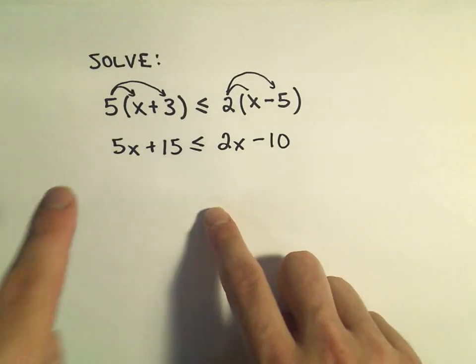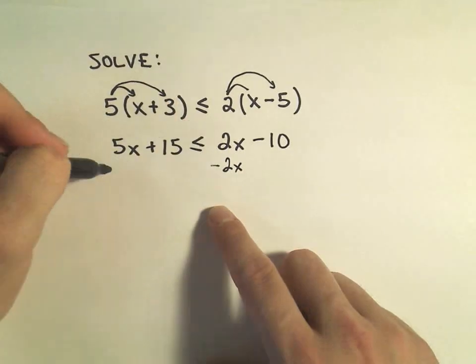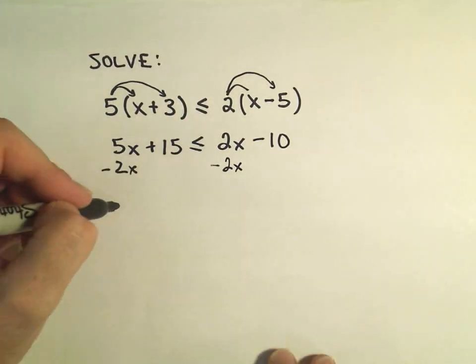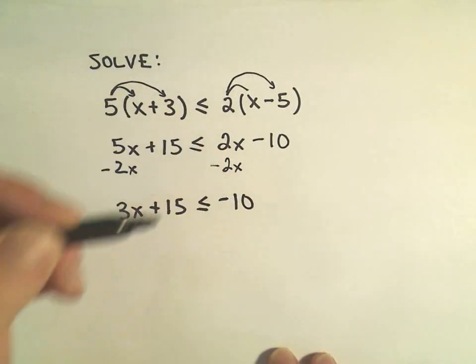I like to keep my x's positive, so since the bigger one's on the left, I'm going to subtract 2x from both sides. So that'll leave me with 3x plus 15 less than or equal to negative 10.